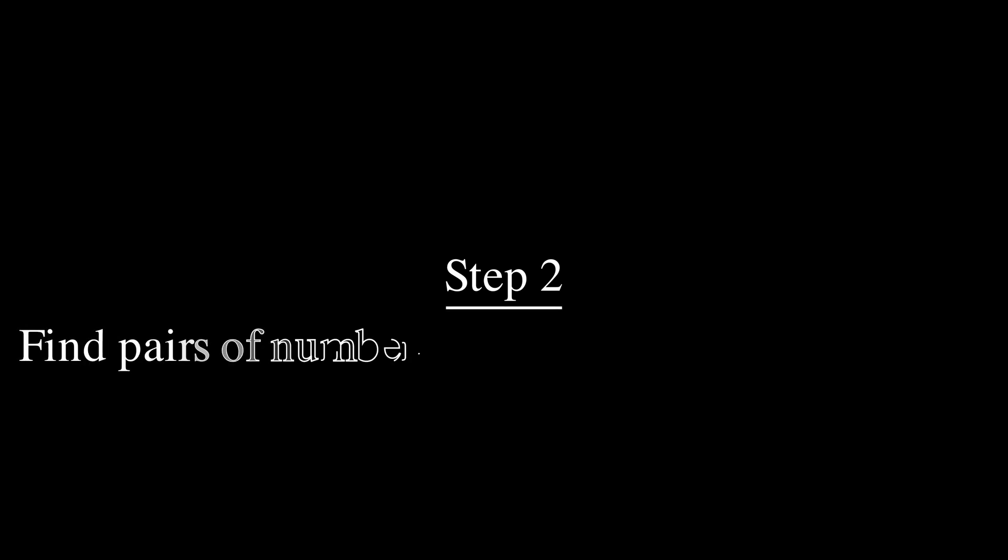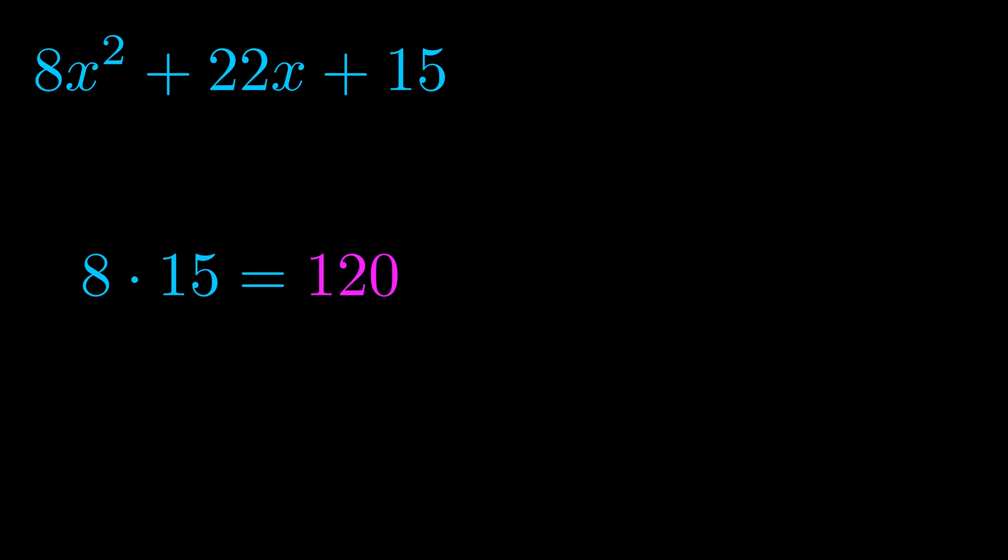Step two is to find all of the pairs which multiply to this number. Now it turns out you don't really need to find all of them, but go ahead and write down as many numbers as you can that multiply to the magenta value for now. Pause the video and resume when you're ready to continue.